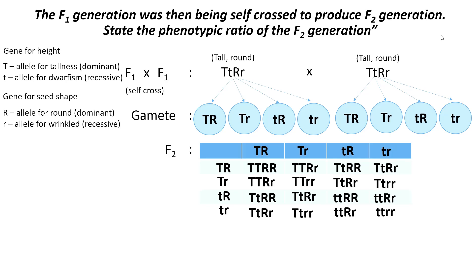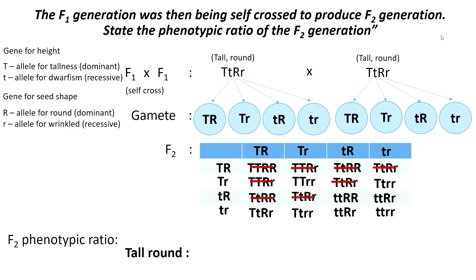After that, write down the phenotypic ratio of the F2 generation. Look at the first box and determine its phenotype — the first one is tall and round. Count how many tall and round individuals are in the Punnett square. There are 9 tall and round.